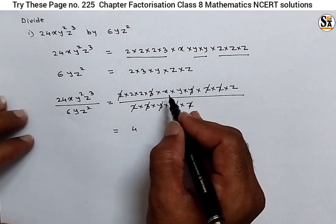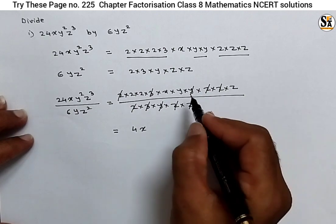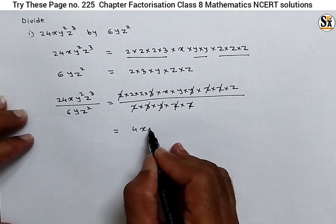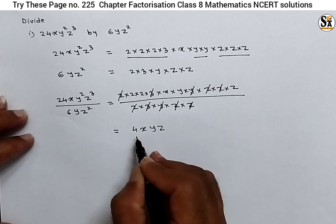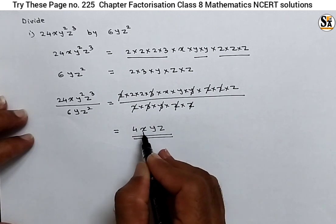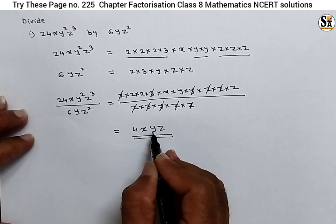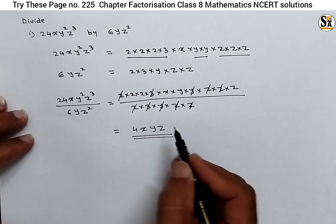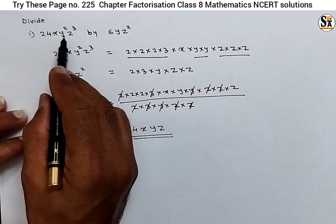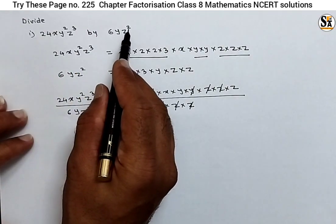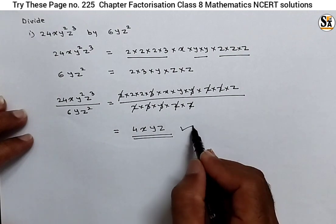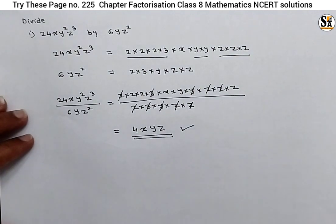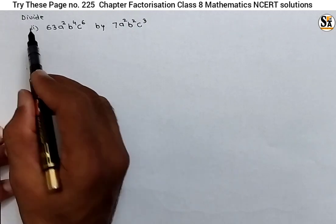Write the remaining factors. Remaining are 2×2, which is 4. Then x is remaining, y is remaining, and one z is remaining. So our answer is 4·x·y·z. This means if we take the division of 24xy²z³ by 6yz², we get the answer 4xyz. This is our final answer. Now see the second sub-question.